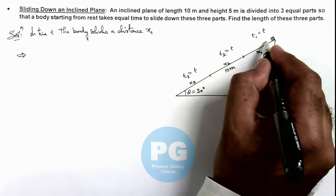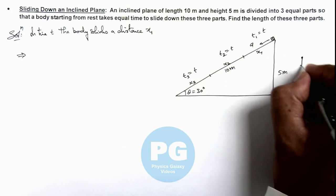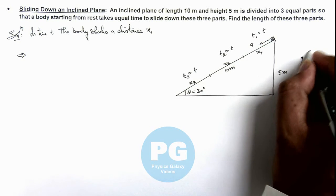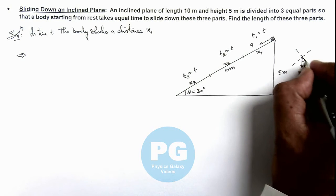the body will have a sliding acceleration a_y, and if we draw the free body diagram of the body, it is experiencing mg in downward direction. Here, this angle would be 30 degrees, so it will be experiencing